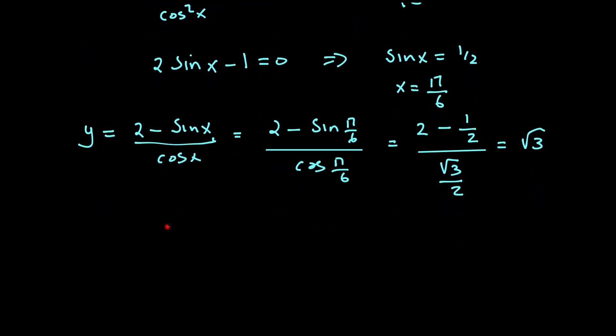So the coordinates of the stationary point are (π/6, √3).